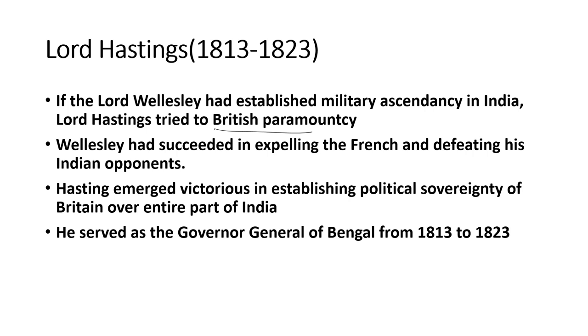With his intention of establishing British paramountcy in India, Lord Hastings adopted many aggressive policies and was able to establish British paramountcy. His period was from 1813 to 1823 as the Governor General of Bengal. We are now going to see the major policies adopted by Hastings, the dominions brought under British control, and the administrative reforms adopted during his tenure.